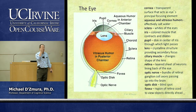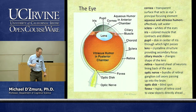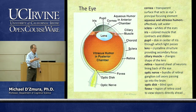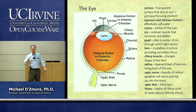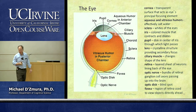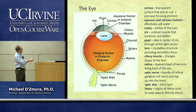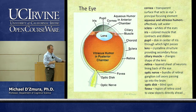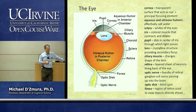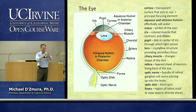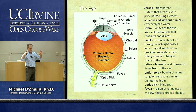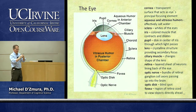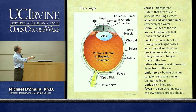The light hits the cornea, which refracts or bends it. It then passes through the pupil — a hole — surrounded by the iris. The iris, which is brown, blue, or green in different people, is a muscle that can contract to make the pupil very narrow or dilate to make it very wide. The light passes through the pupil and contacts the lens, which can change its shape, and eventually we get a focused image on the retina.